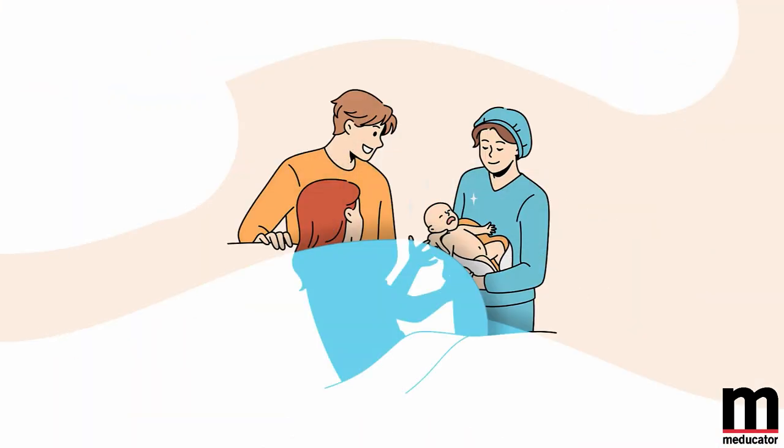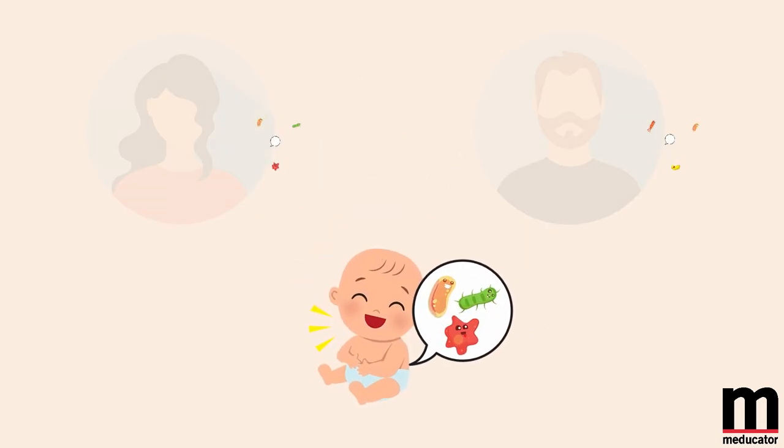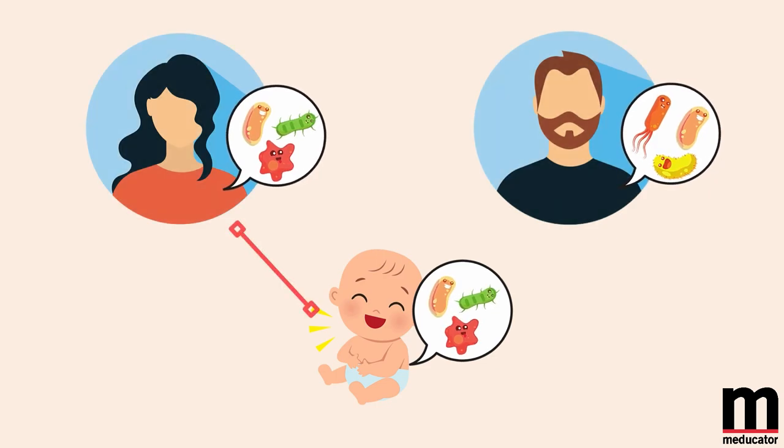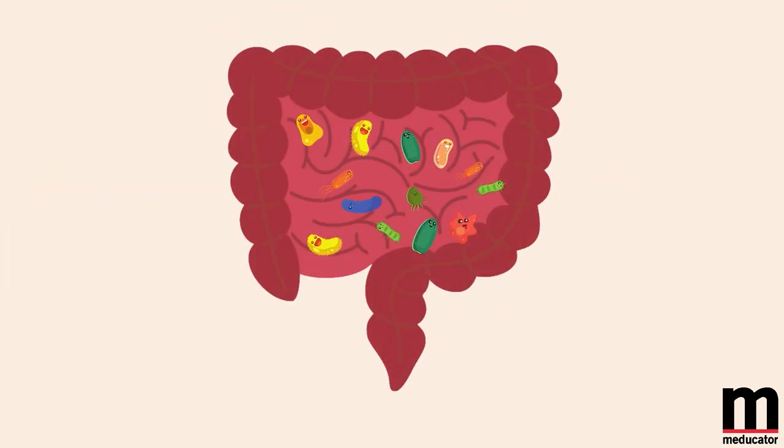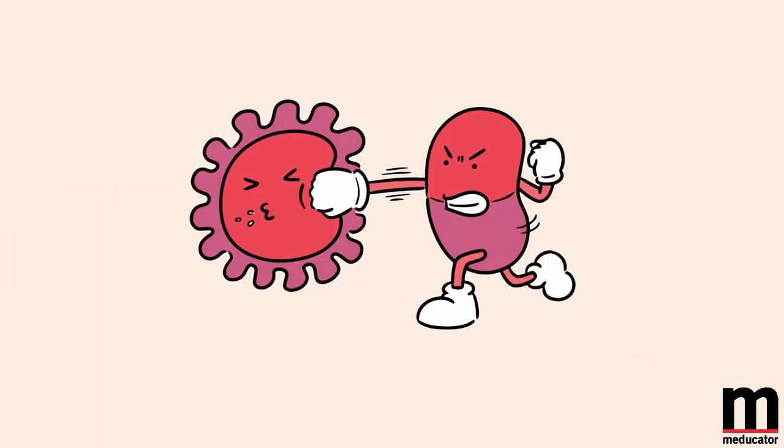The first time we're exposed to microorganisms is during birth, which is why our initial microbiota most closely resembles our mother's. We form a symbiotic relationship with our gut microbiota. We provide a hospitable place for it to thrive and it protects us from infection.